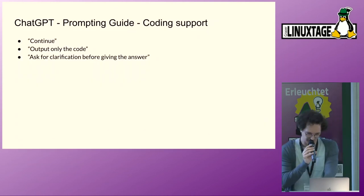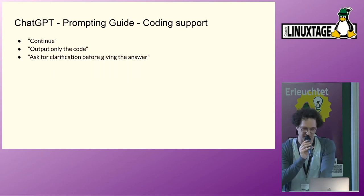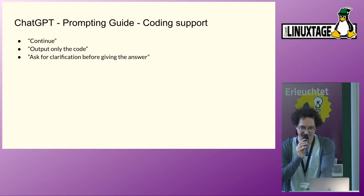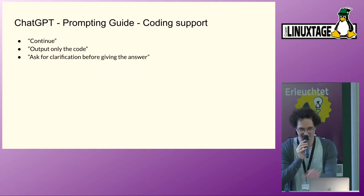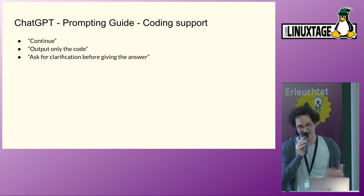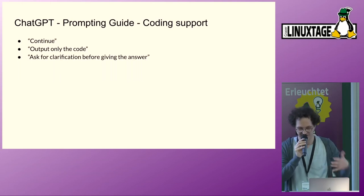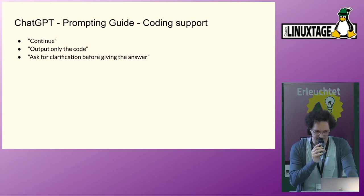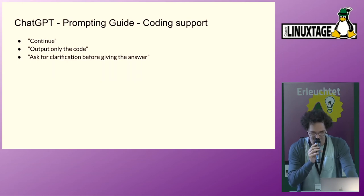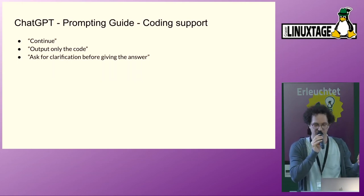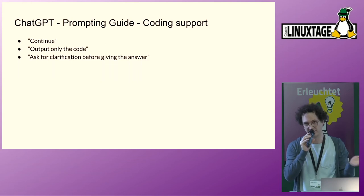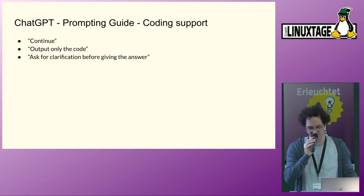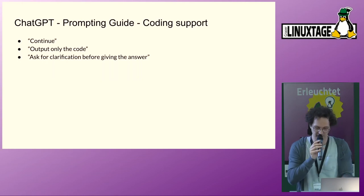Some quick coding support tips. Sometimes the output is truncated — just type 'continue' and it will continue. It also gives a lot of explanation before and after outputting code; if you just want the code, tell it in the first line 'output only the code.' Also, if you can see when it starts typing that it didn't get the question correctly, add 'ask for clarification before giving an answer' to your initial prompt — it will then ask questions about things that are unclear.